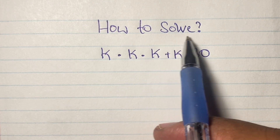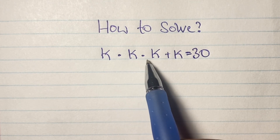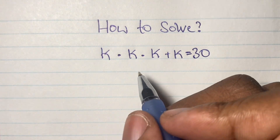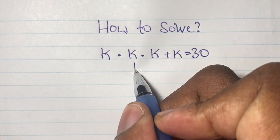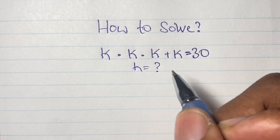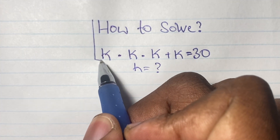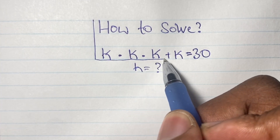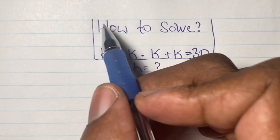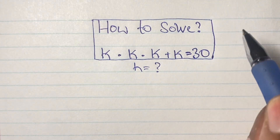Greetings everyone, welcome back to my channel. We have another algebraic equation to solve: k times k times k plus k is equal to 30, and we are going to find the value of k. As usual, you can pause this video to see if you can solve this one by yourself, or check out my math olympiad playlist to see how to solve other algebraic equations like these.